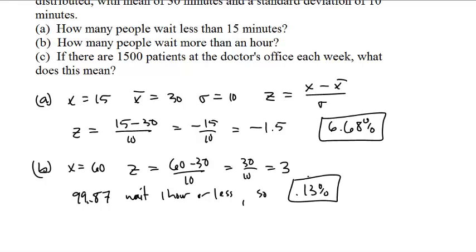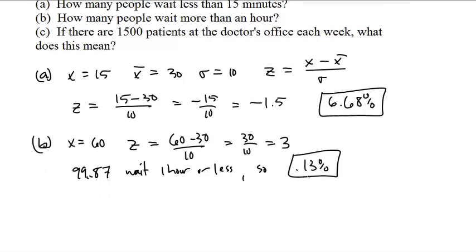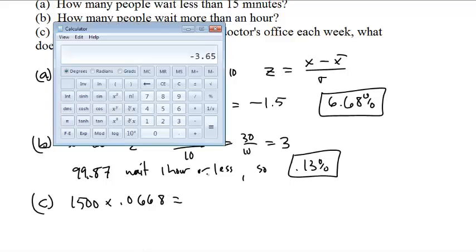If there are 1,500 patients at the doctor's office each week, what does that mean? Well, what is 6.68% of 1,500? 1,500 times 0.0668 is something I need a calculator for. 1,500 times 0.0668 is 100.2.